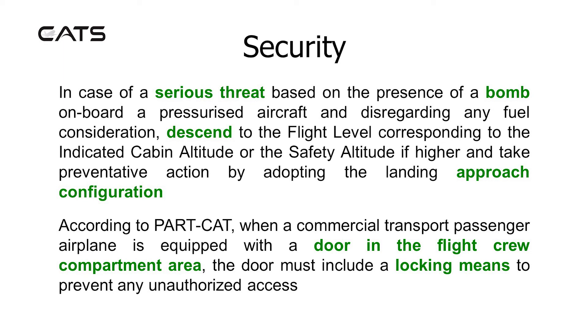According to Part CAT, when a commercial transport passenger airplane is equipped with a door in the flight crew compartment area, the door must include a locking means to prevent any unauthorised access.